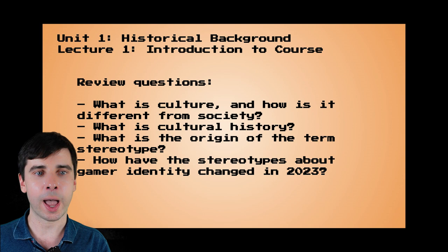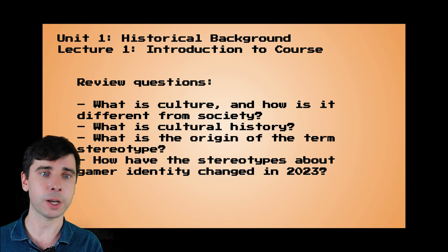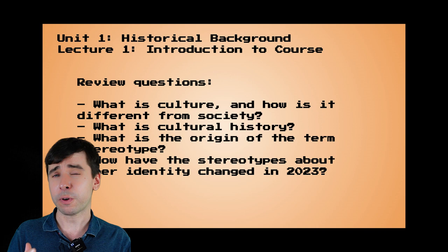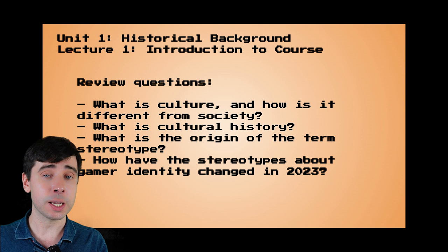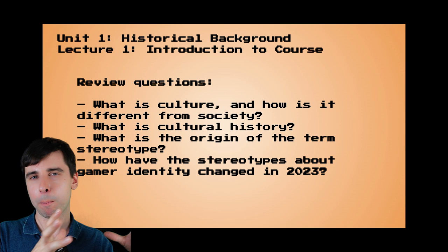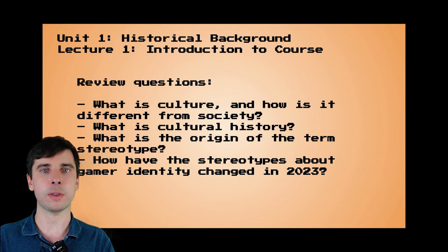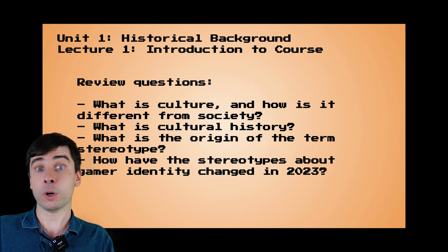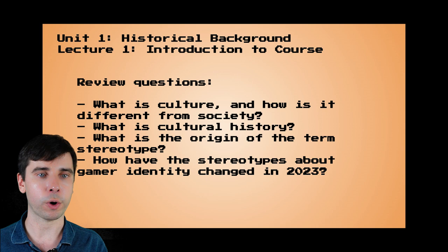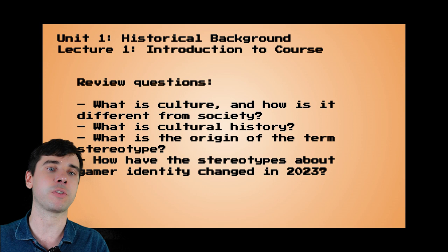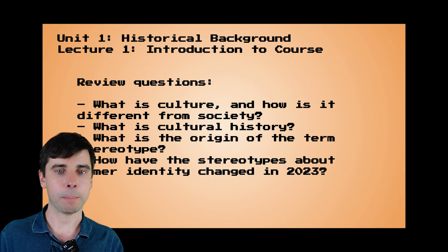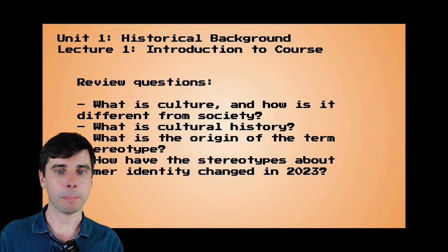Here's a little review slide to go over what we covered — things you might see come up in journal entries or discussions. Today we talked about what culture is and how it's different from society. We defined cultural history a little better, using tools such as etymology — understanding the meaning of a word like 'stereotype' can help you understand how mass media works to create identities and how individuals exist within culture and society. We also talked about the origins of that term stereotype using etymology. And perhaps my favorite part: we talked about how stereotypes around the gamer identity have changed leading up to 2023. There's going to be one more video that discusses your first assignment — look out for that in the next module. Take care, bye-bye.